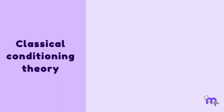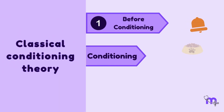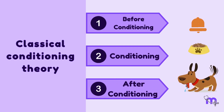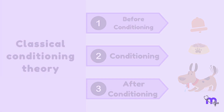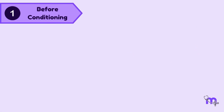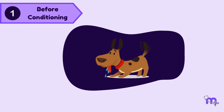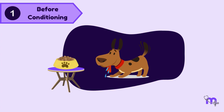Let us now get into the details. There are three stages of classical conditioning, and at each stage, the stimuli and responses are given specific scientific terms. The first stage is the one before conditioning. We all know that a natural response like salivation in the dog at the sight of food need not be taught.